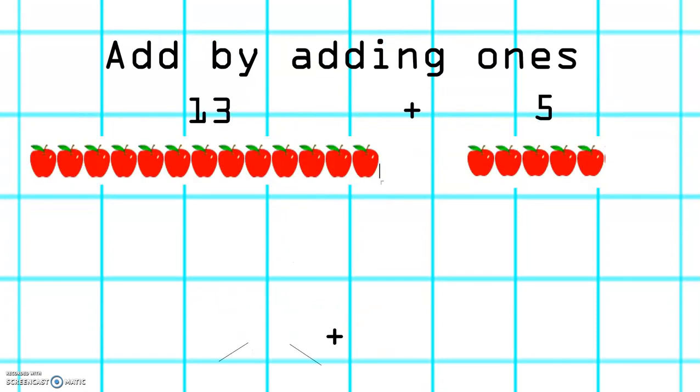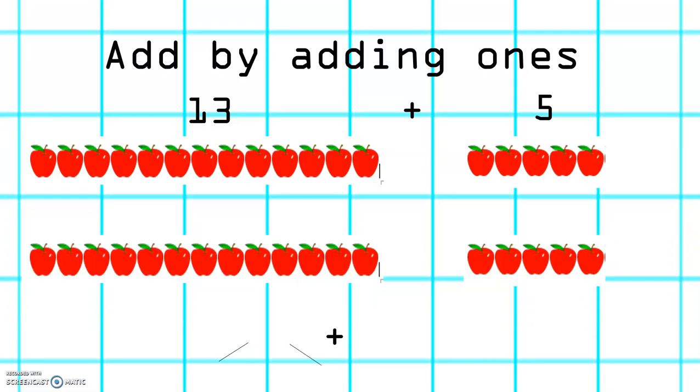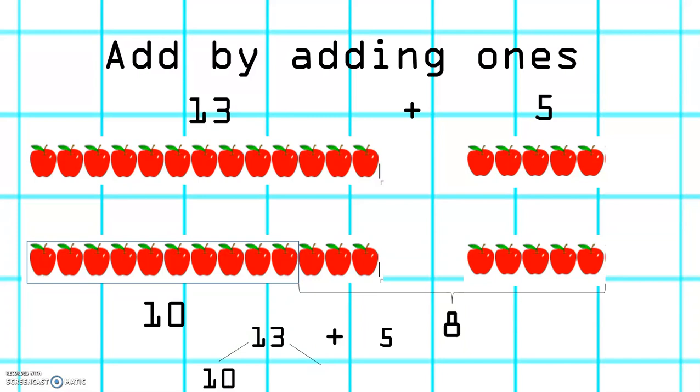A different method we can use is to add by adding ones. Here we have the problem 13 add 5. Again, we're going to make 10, and then we're going to add the ones. So 3 plus 5 equals 8. So if we partition 13, it gives us 10 plus 3. We're going to add our ones, which is 3 plus 5. 10 plus 8 equals 18. So 13 plus 5 equals 18.